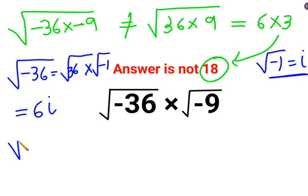Similarly, root of negative 9 can be written as root of 9 multiplied by root of minus 1, which can be written as 3i.